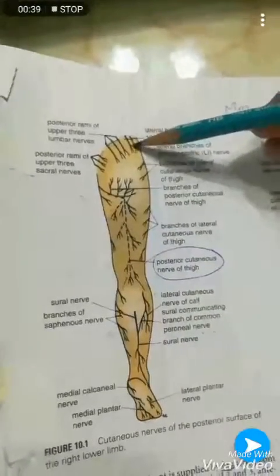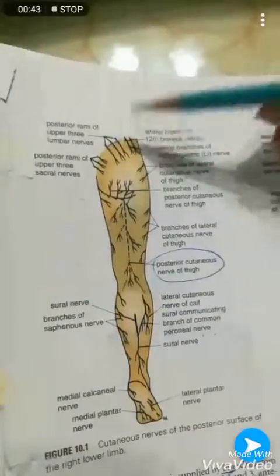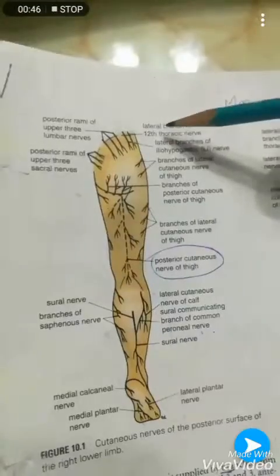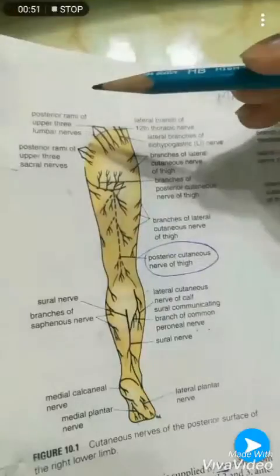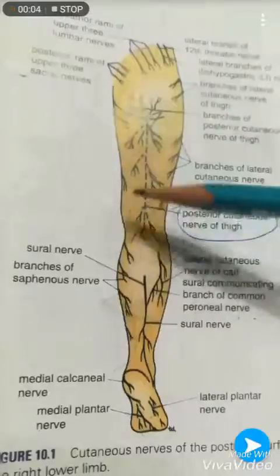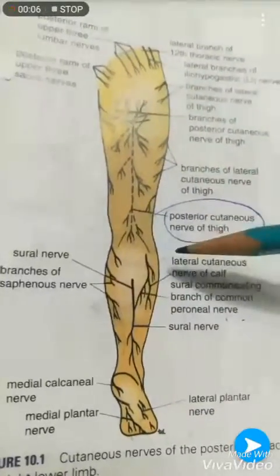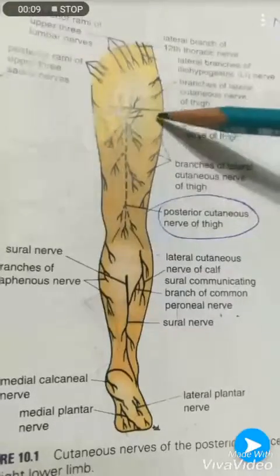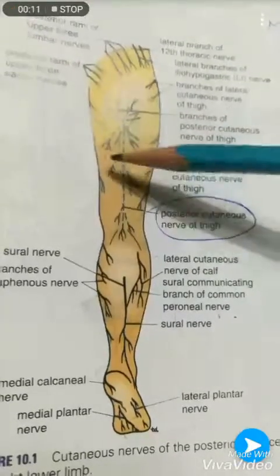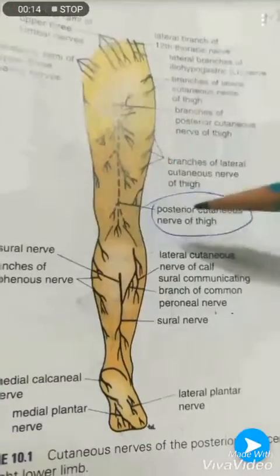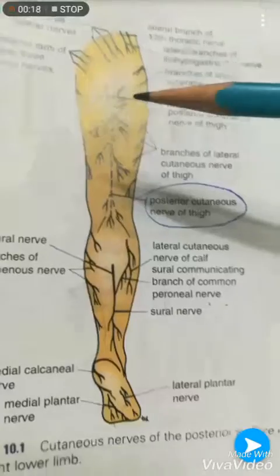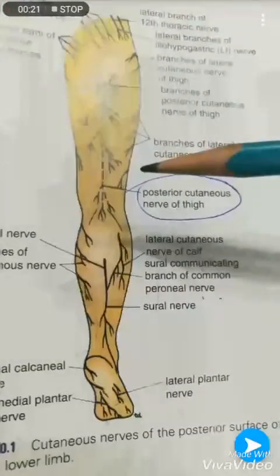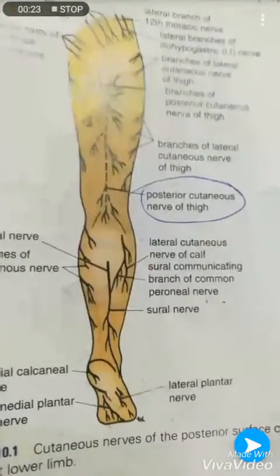Then you have the lateral side. The upper lateral quadrant of the lower limb is receiving its branches — not from the posterior side — but from the anterior rami of your iliohypogastric nerve. The lower lateral part of the lower limb is supplied from your lateral cutaneous nerve of the thigh. And the lower medial side of the lower limb region is supplied from your posterior cutaneous nerve of the thigh. In between, there are lymph nodes present in your superficial inguinal lymph nodes, which we will study later on.